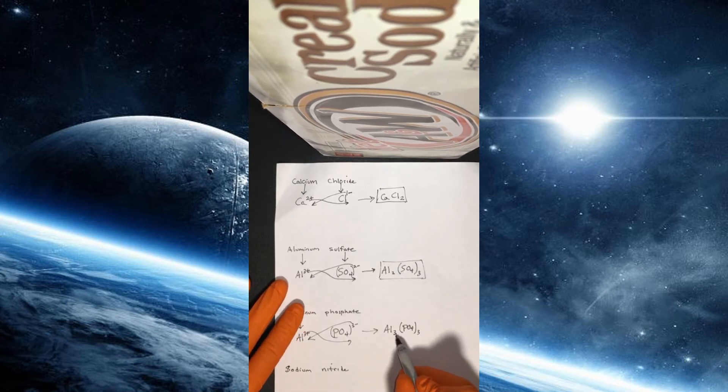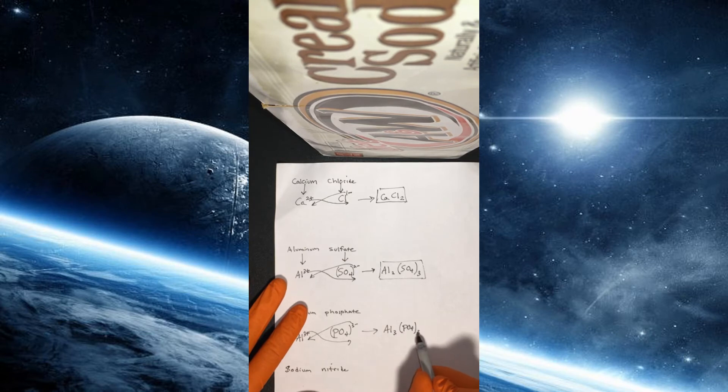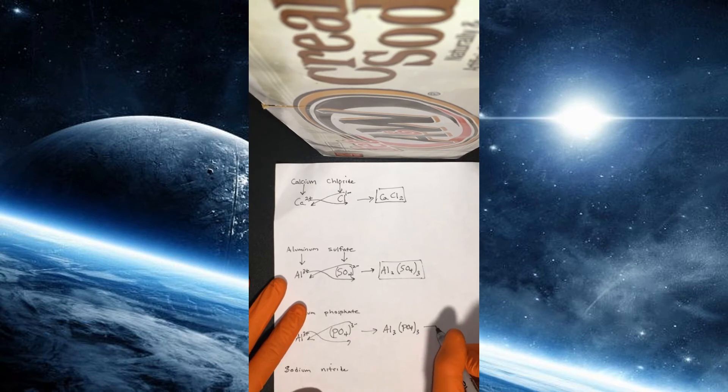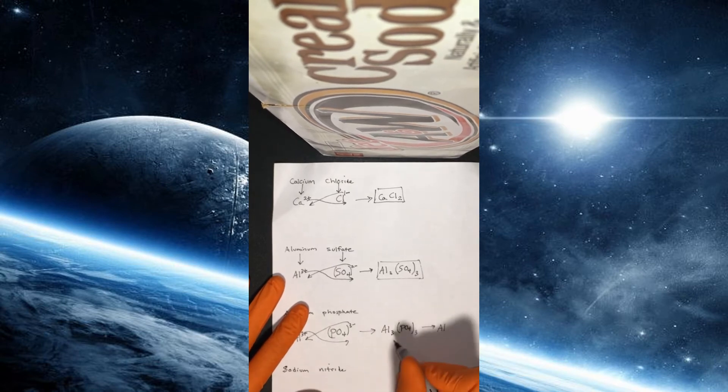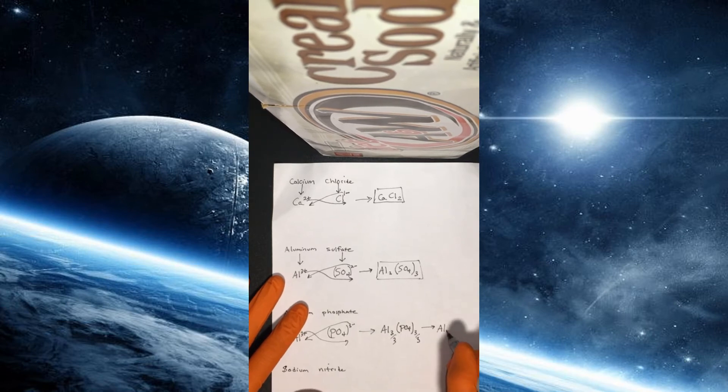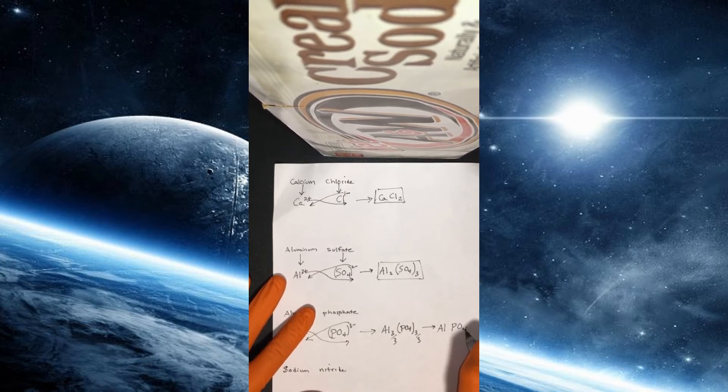Whenever you have a situation where you can divide both of these numbers by something, that is, they're both divisible by three, you actually have to do that. And so you could think about essentially dividing both of these by three.